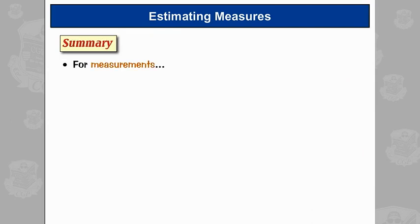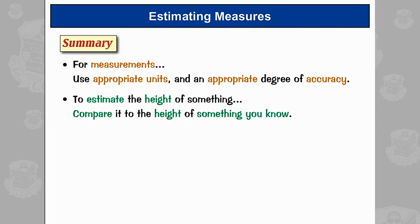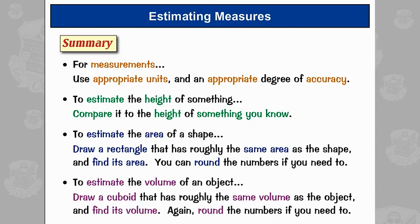So, in summary, for measurements, you need to use appropriate units and an appropriate degree of accuracy. To estimate the height of something, compare it to the height of something you know. To estimate the area of a shape, draw a rectangle that has roughly the same area as the shape, and find its area. You can round the numbers if you need to. And to estimate the volume of an object, draw a cuboid that has roughly the same volume as the object, and find its volume. Again, round the numbers if you need to. So that's it.